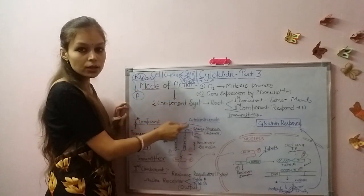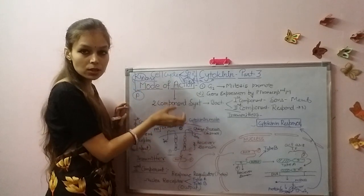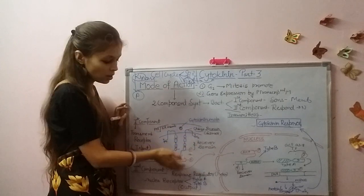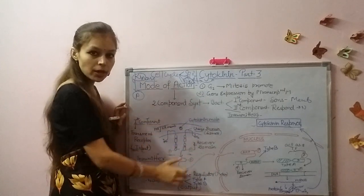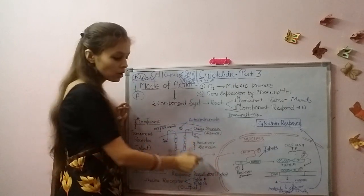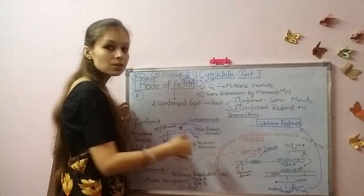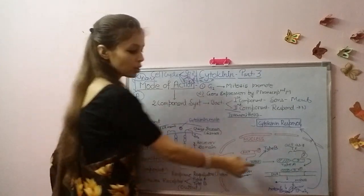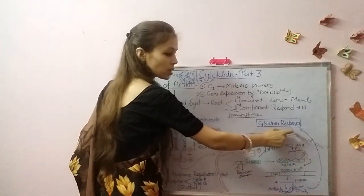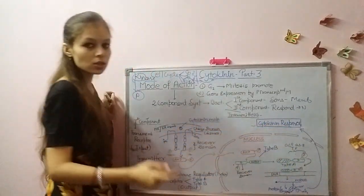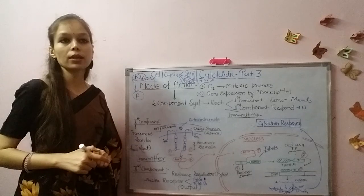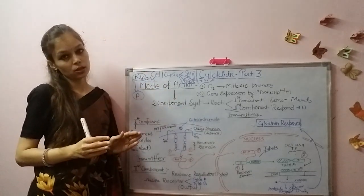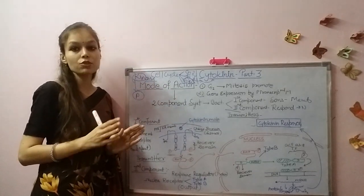This is how cytokinin input through the two-component system — the first component sensing and the second component responding — leads to gene expression response.